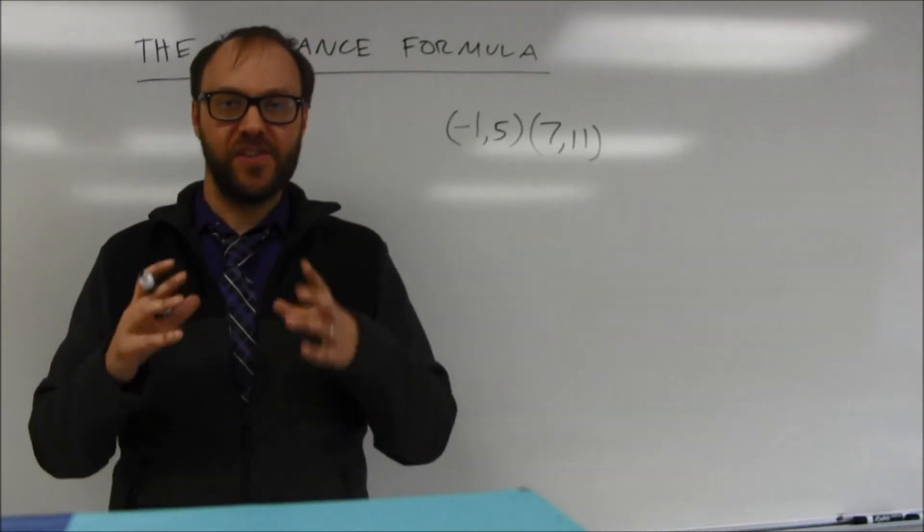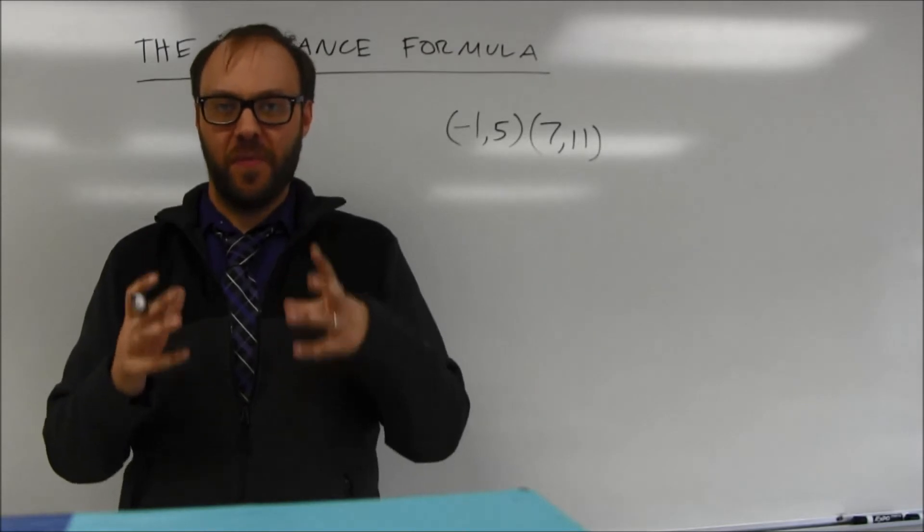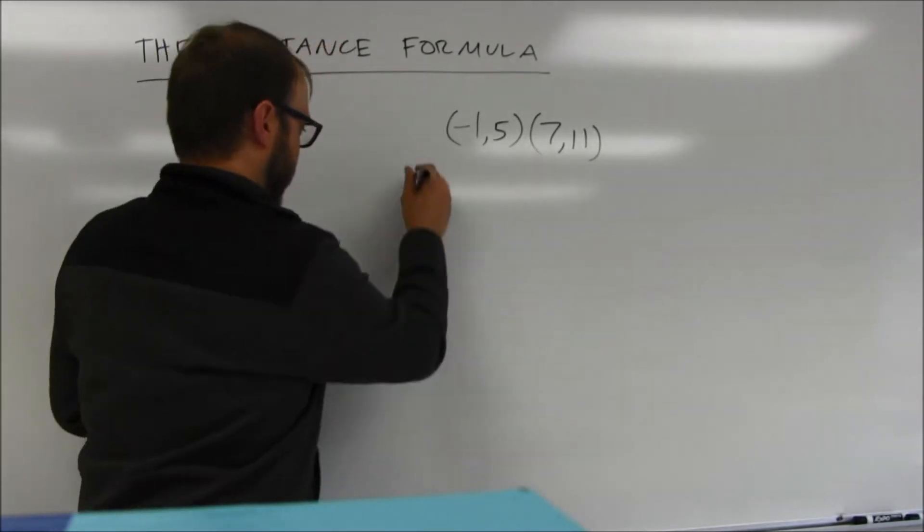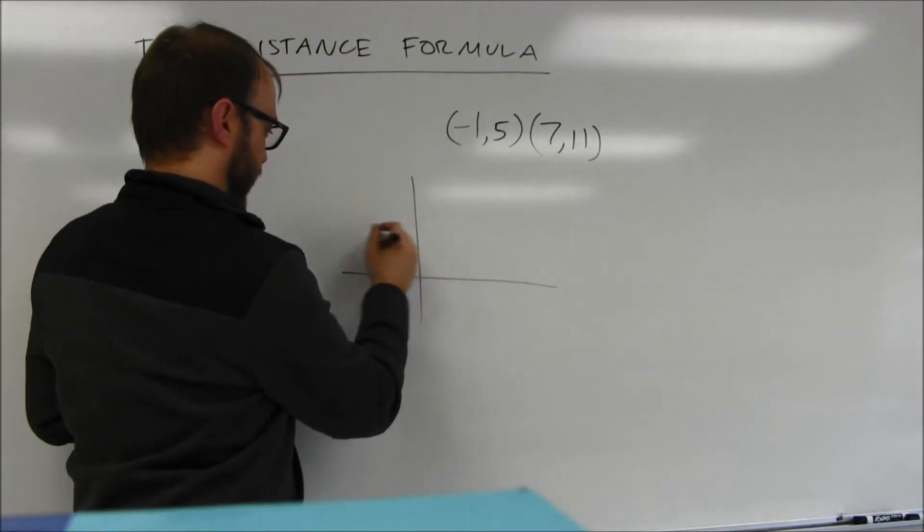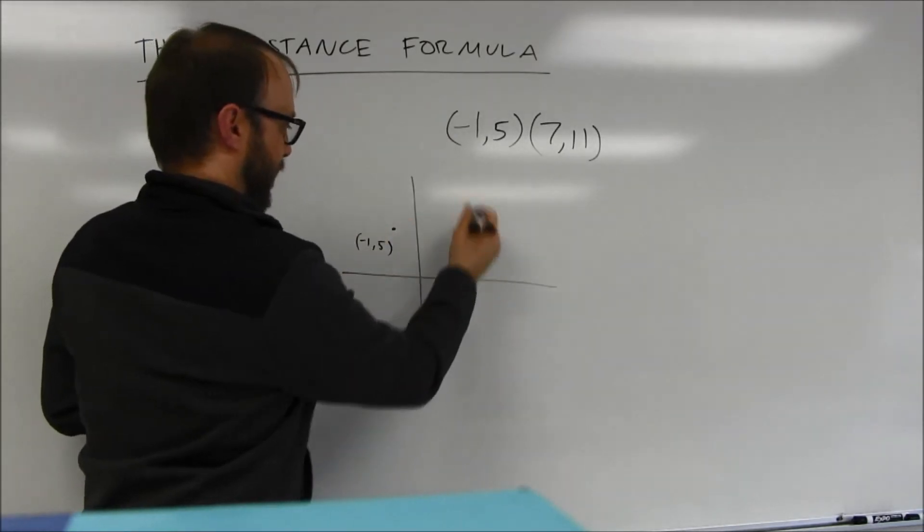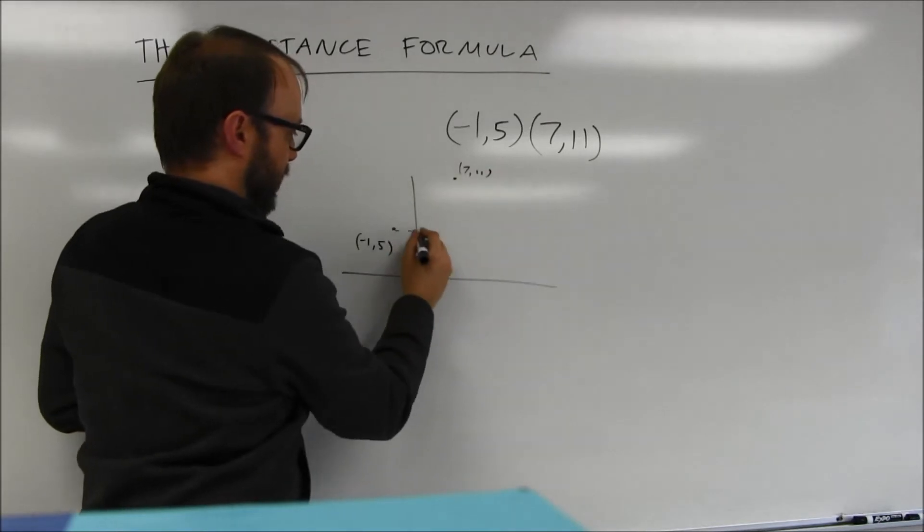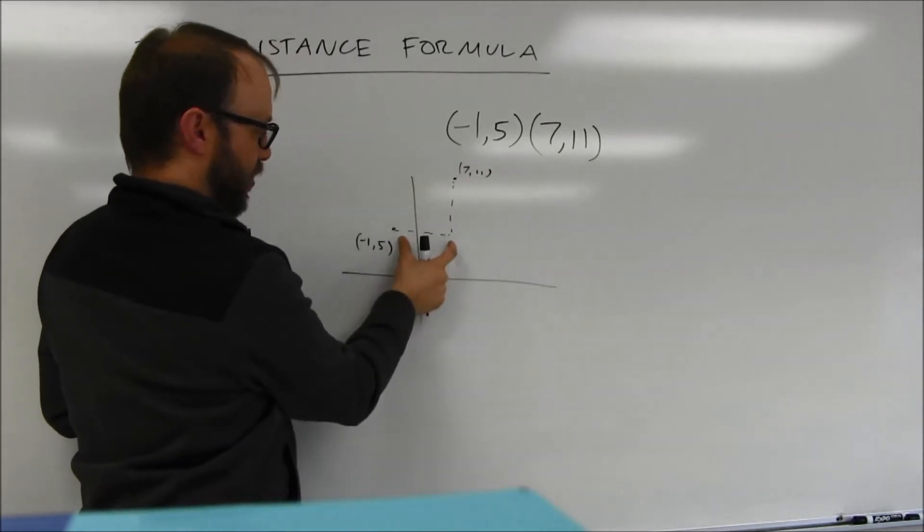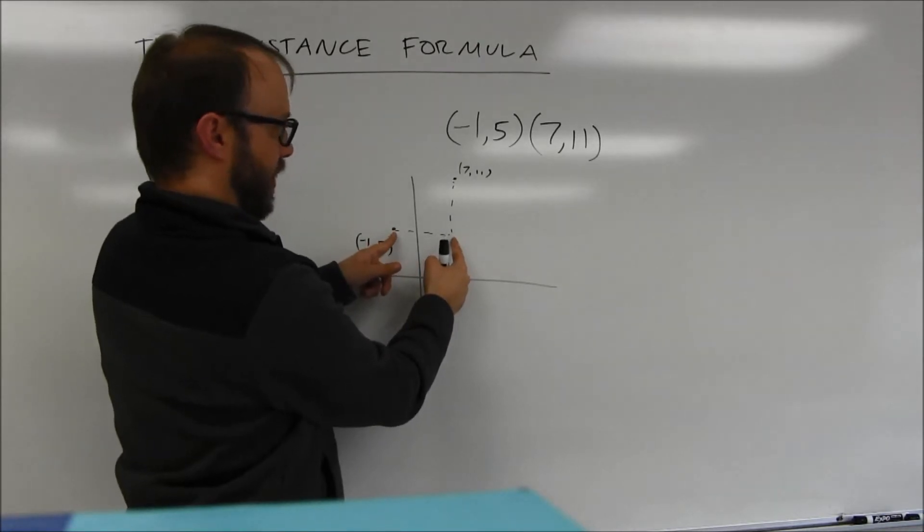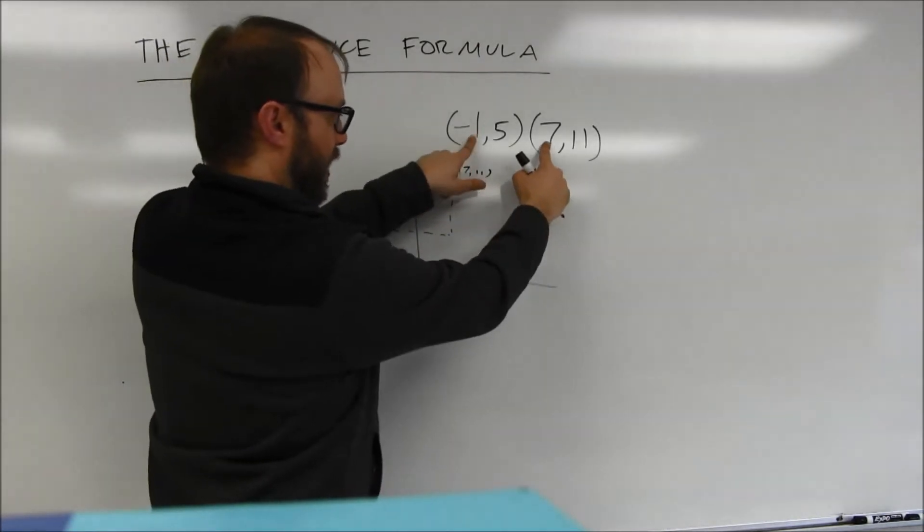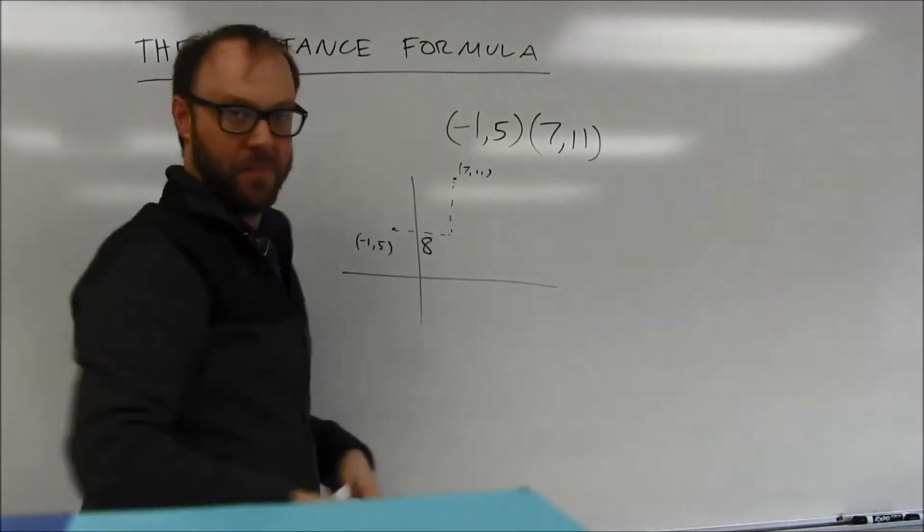Remember that I said that the distance formula actually comes from the Pythagorean theorem. So if you've got the point (-1, 5), which is somewhere over here, and you've got the point (7, 11), what you're really doing is you're finding out how far you go over. That's really just the distance between the two x coordinates. Notice, -1 and 7 are 8 units apart.